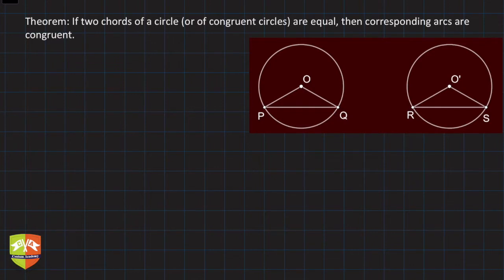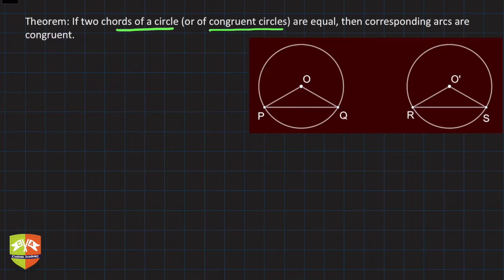In this theorem we will be going through the converse of the previous theorem. In the previous theorem, it was given that if two arcs of a circle or congruent circles are congruent, then the corresponding chords were equal. Now the converse of this would be: if two chords of a circle, or of congruent circles, are equal, then the corresponding arcs are congruent. That's what we have to prove.